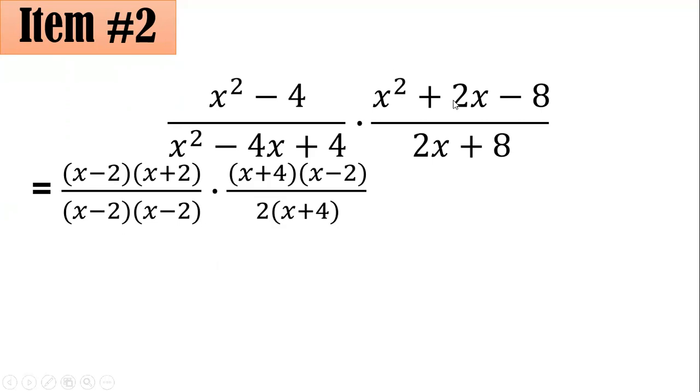The x squared plus 2x minus 8 could be factored as x plus 4 times x minus 2. Whereas for the denominator here, 2x plus 8, you could take out the GCF as 2. So we have here 2 times x plus 4. So now we are able to factor the expression completely.